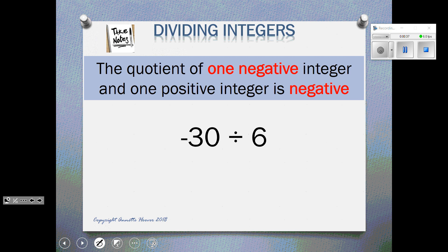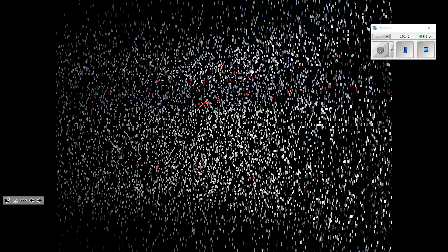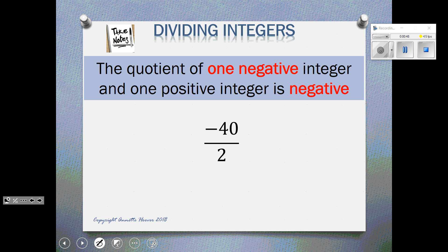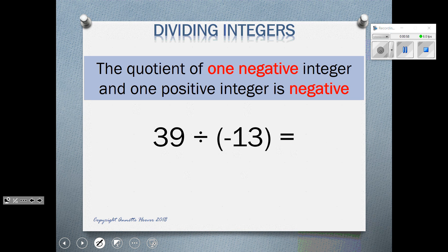Same rule, I know that 30 divided by 6 is 5. I count one negative sign, so it would be negative 5. Same rule, 40 divided by 2 is 20. One negative makes it negative 20. 39 divided by 13 is 3. I see there's one negative, so I know it is negative 3.